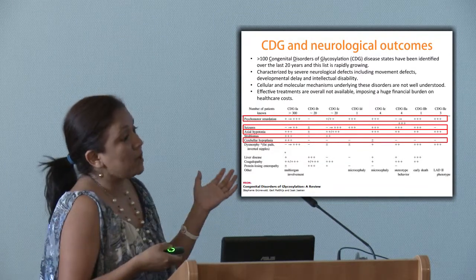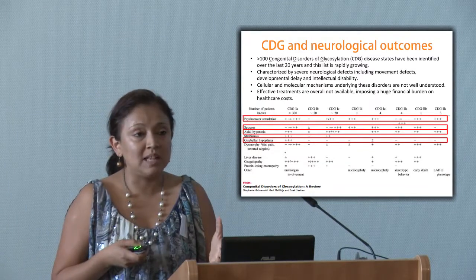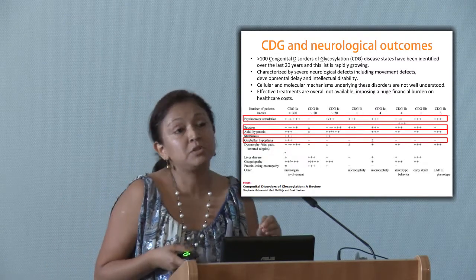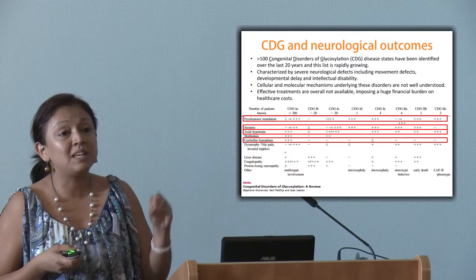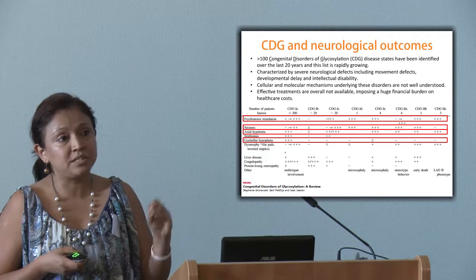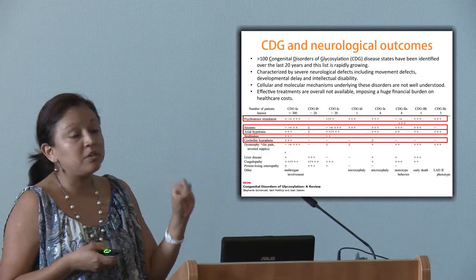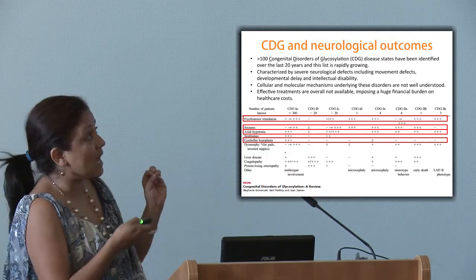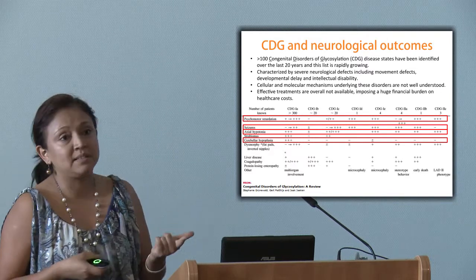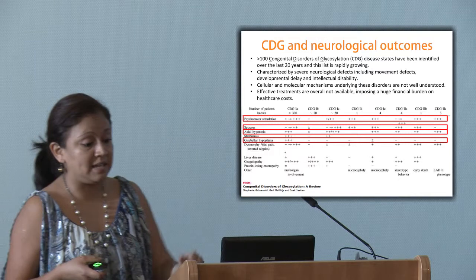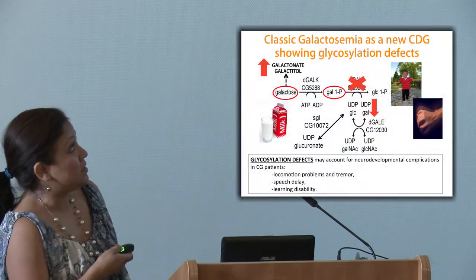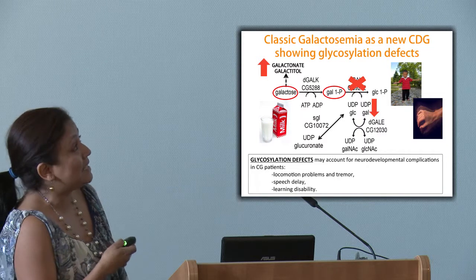We wanted to use an animal model to see what happens at the level of synapses. We are not using a CDG model, but a disease model that has been shown to have glycosylation defects. Our interest is to see how modifying glycosylation levels at the synapse will impact behavior and synapse structure. We are focusing on a model known as classic galactosemia.